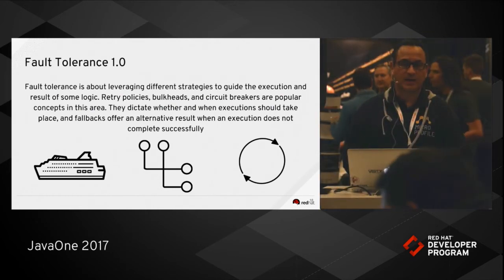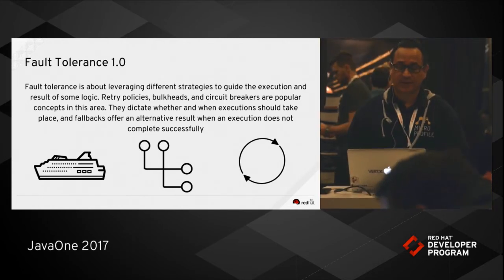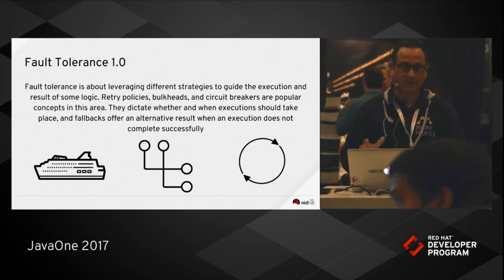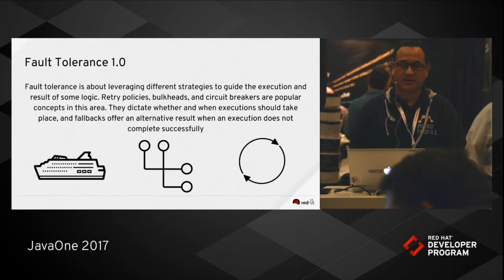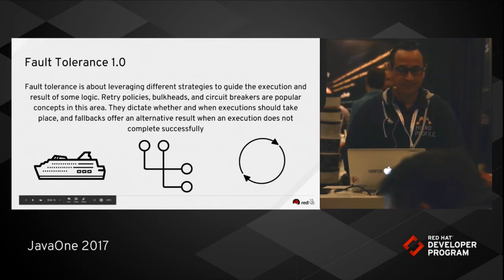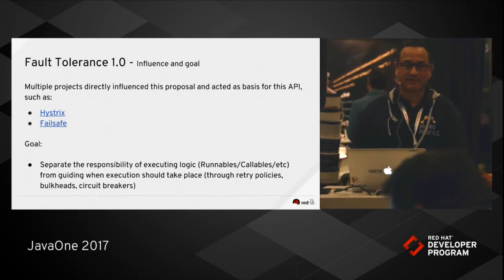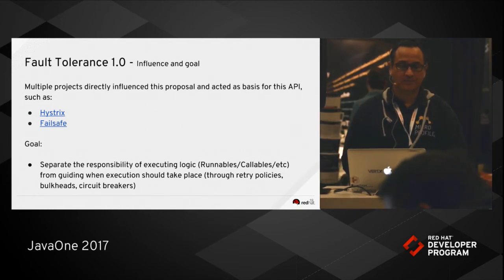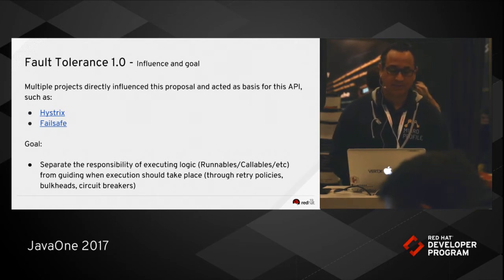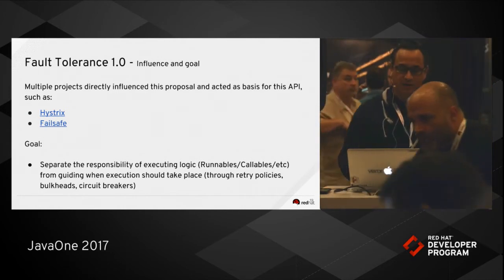Fault Tolerance is another API introduced in 1.2. This is the API that includes things like retry policies, bulkheads, and circuit breakers — concepts that fall within fault-tolerant design. They dictate whether and when executions should take place, and fallbacks offer an alternative result when an execution does not complete successfully. The influence projects were Hystrix and Failsafe, where the community looked for best practices and lessons learned. The logic was to separate the responsibility of executing logic from guiding when execution should take place through retries, bulkheads, and circuit breakers.